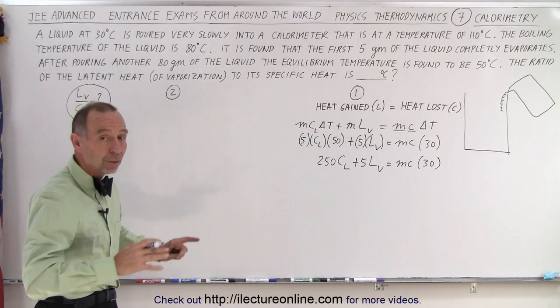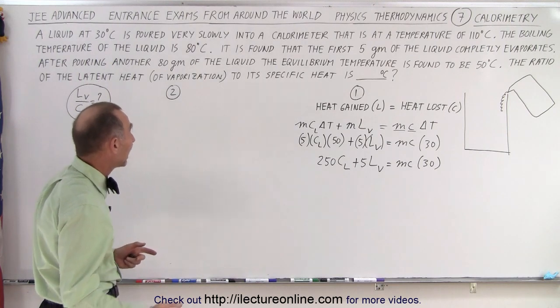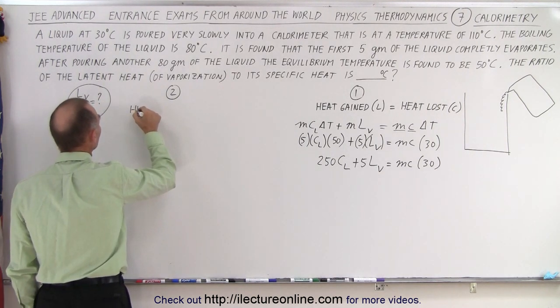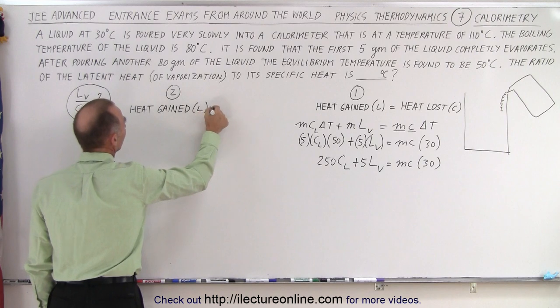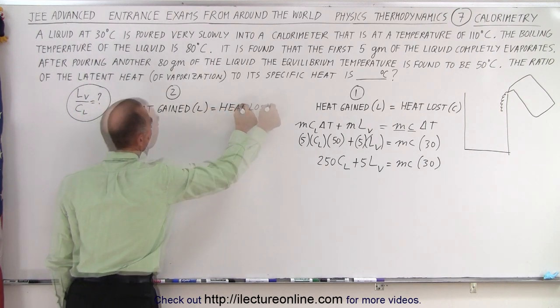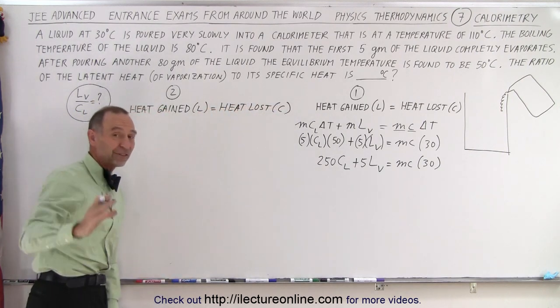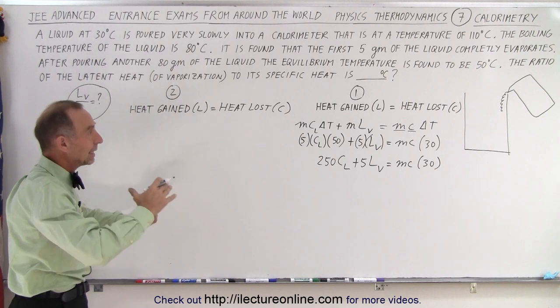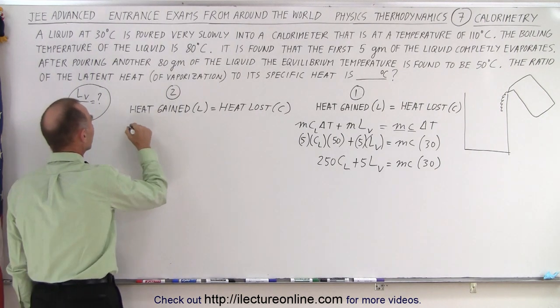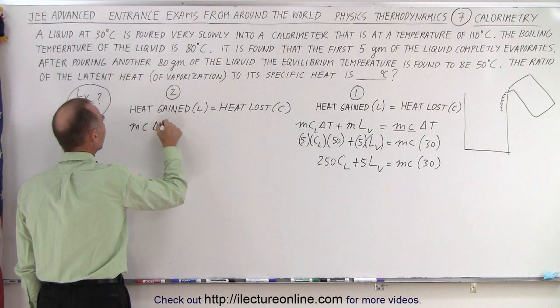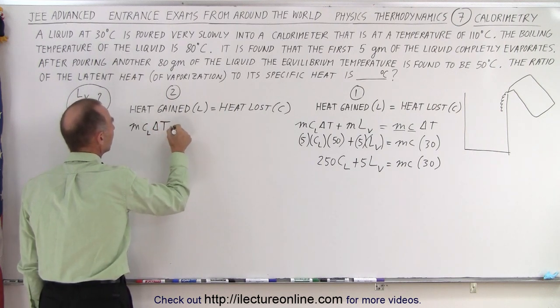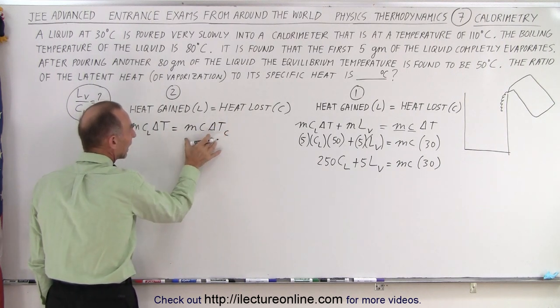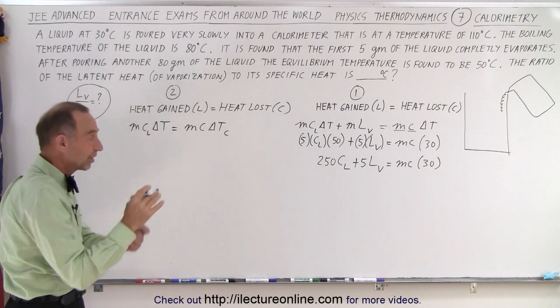Now the whole thing is at 80 degrees Celsius or centigrade. Now we pour 80 grams of additional liquid into the system. So now again we have heat gained by the liquid is equal to heat loss by the calorimeter. Now notice that the first five grams that were poured in evaporated, so there's still no liquid to this point, only calorimeter at 80 degrees centigrade. So heat gained is going to be MC delta T. Now this is C of the liquid equals MC delta T of the calorimeter. Again, this must be positive and this must be positive because the way we set up the equation.